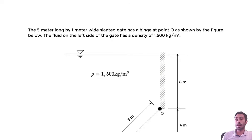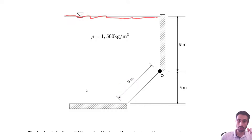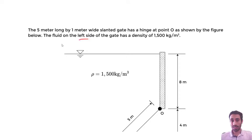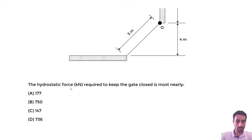From a subscriber request, let's do an example to solve for the hydrostatic force that acts on a slanted surface that's submerged. We have a 5-meter long by 1-meter wide slanted gate with a hinge at 0.0 as shown in the figure. The gate is submerged below a top water surface, and the fluid on the left side has a density of 1500 kg/m³. We want to find the hydrostatic force in kilonewtons required to keep the gate closed.